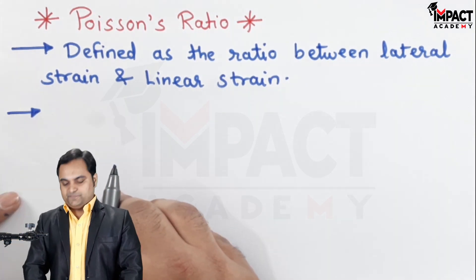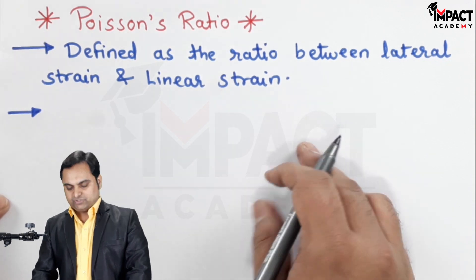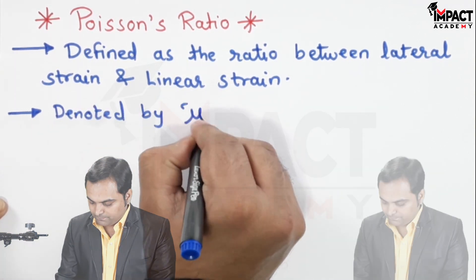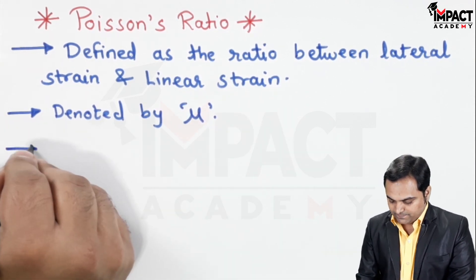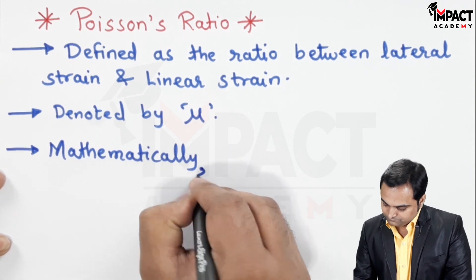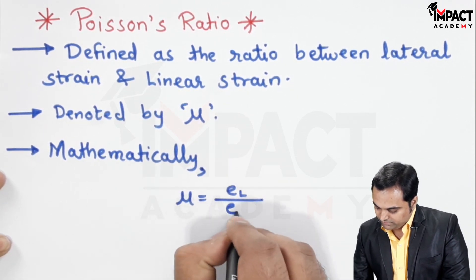Poisson's ratio is basically defined as the ratio between lateral strain and linear strain, denoted by mu, and it is given by the formula mu equals lateral strain upon linear strain.